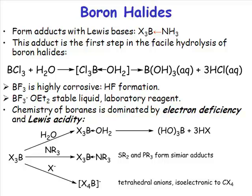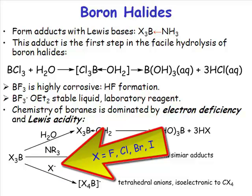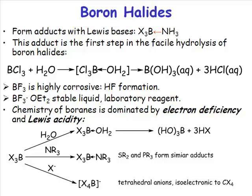Your base does not have to be neutral. The definition of a Lewis base is simply something which is a lone pair donor, and it's perfectly possible to have Lewis base donors which are anionic. A good example of an anionic Lewis base donor is X minus, where X is a halogen atom — a halide ion. Boron trichloride will form an adduct with the chloride anion.